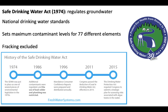The Safe Drinking Water Act regulates groundwater — underground aquifers which supply much of our drinking water. It sets national drinking water standards and maximum contaminant levels for 77 different elements. Notably, it does not include fracking as a regulated activity, which is a significant workaround. It's been around since the mid-1970s and has done a lot to protect drinking water.